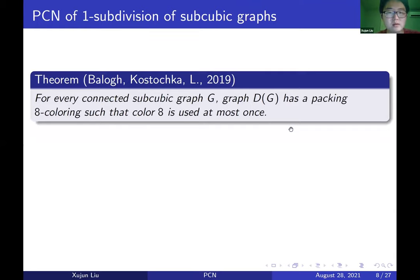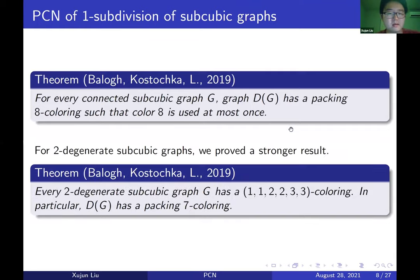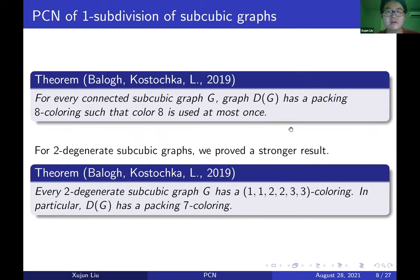This is our main statement. For a 2-degenerate subcubic graph, we proved something stronger: it has a 1-1-2-2-2-3-3 coloring, which in particular implies that DG has a packing 7-coloring.